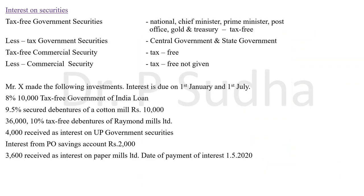This is another important topic under income from other sources — interest on securities. Tax-free government securities is exempted income. Less-taxed government securities is taxable. Tax-free commercial securities is taxable. Less-taxed commercial securities is taxable. So out of the four categories of interest, only tax-free government securities is exempted; all others are taxable. Regarding grossing up: for less-taxed government securities, there is no grossing up at all. For tax-free commercial securities, you must gross up. For less-taxed commercial securities, you gross up only when the words 'net' or 'received' are given.